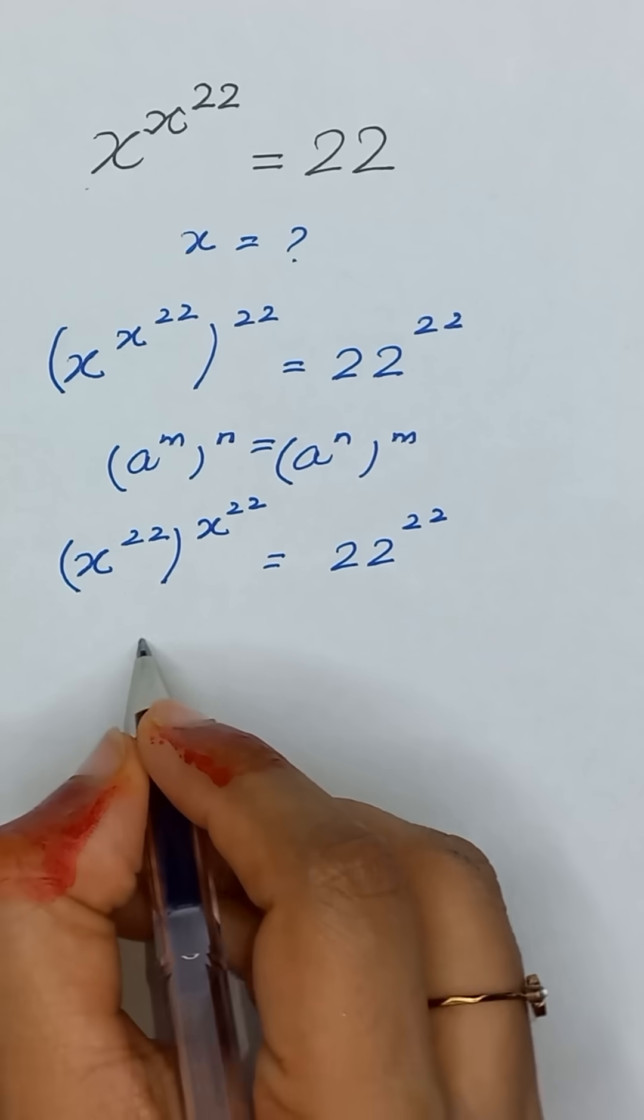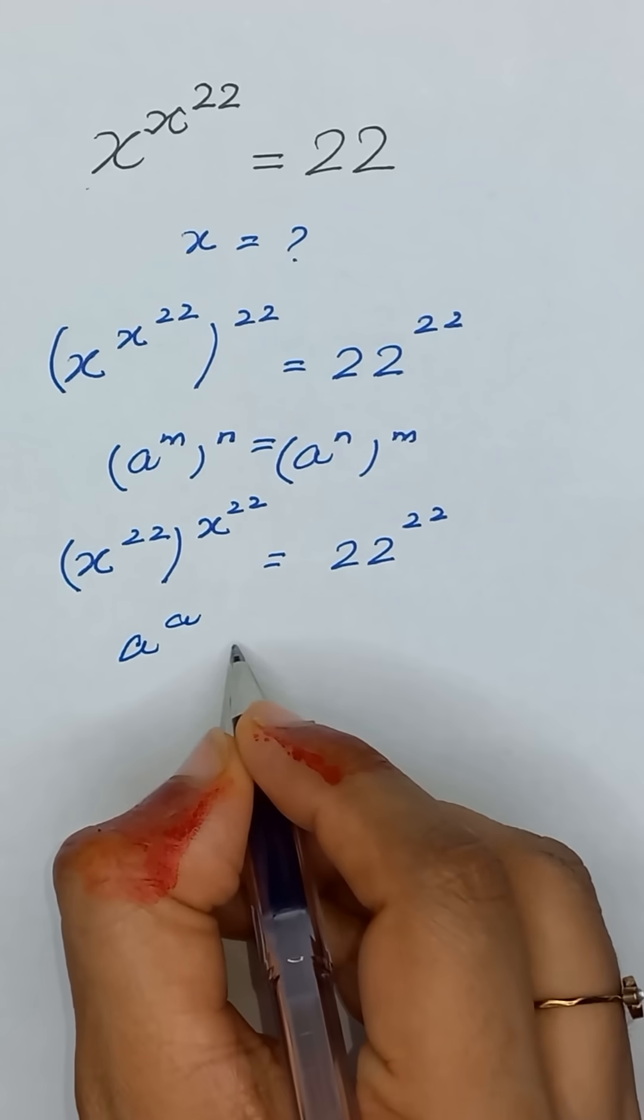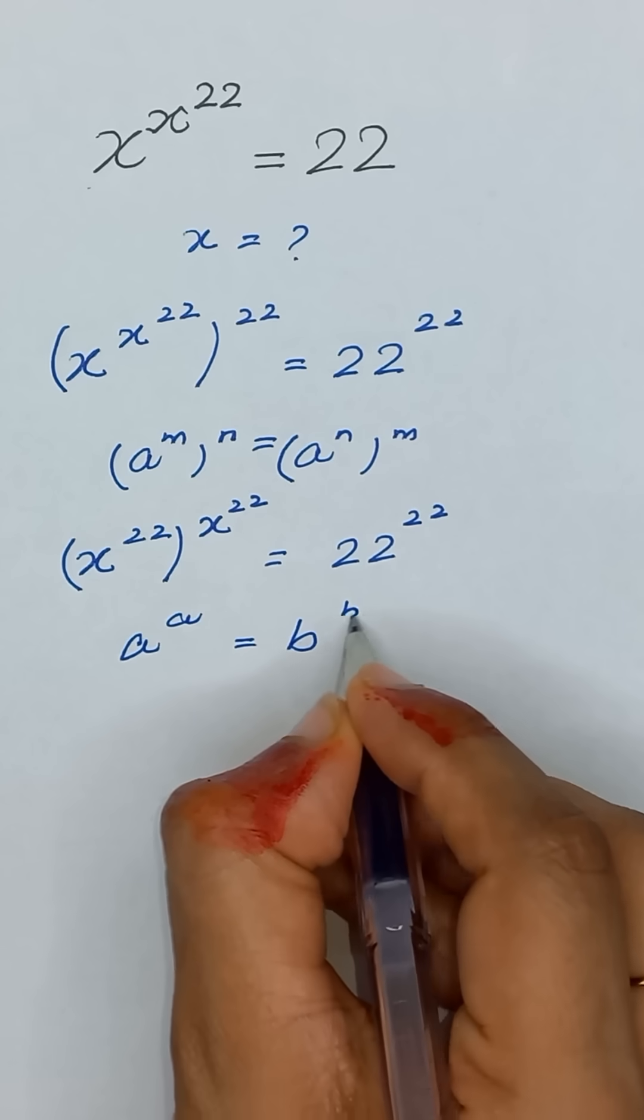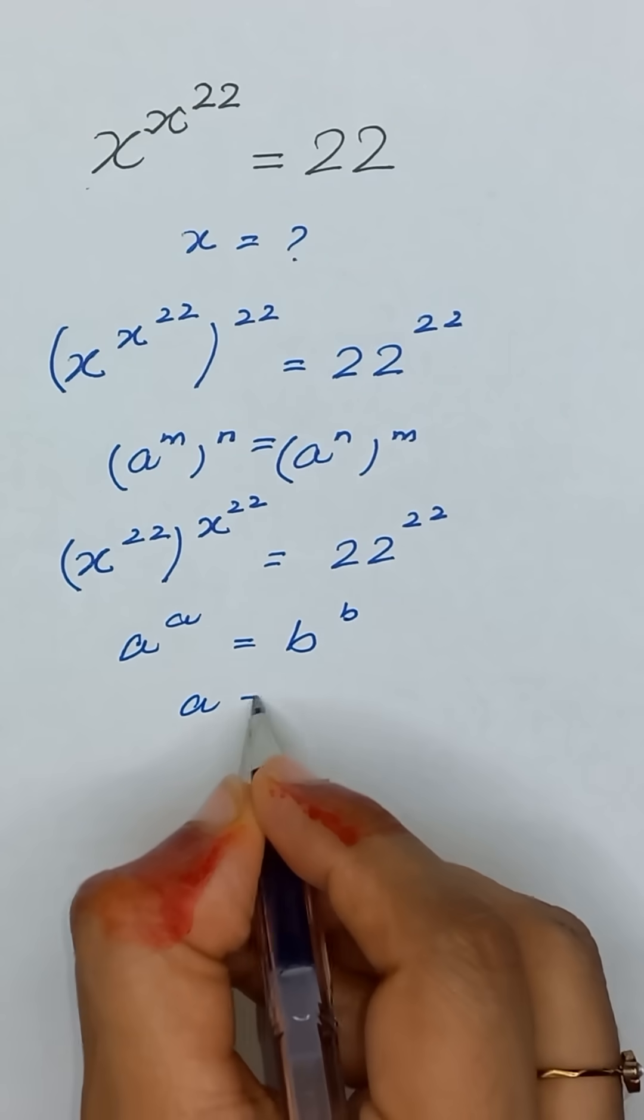From exponent power rule, if a to the power a is equal to b to the power b, then a is equal to b.